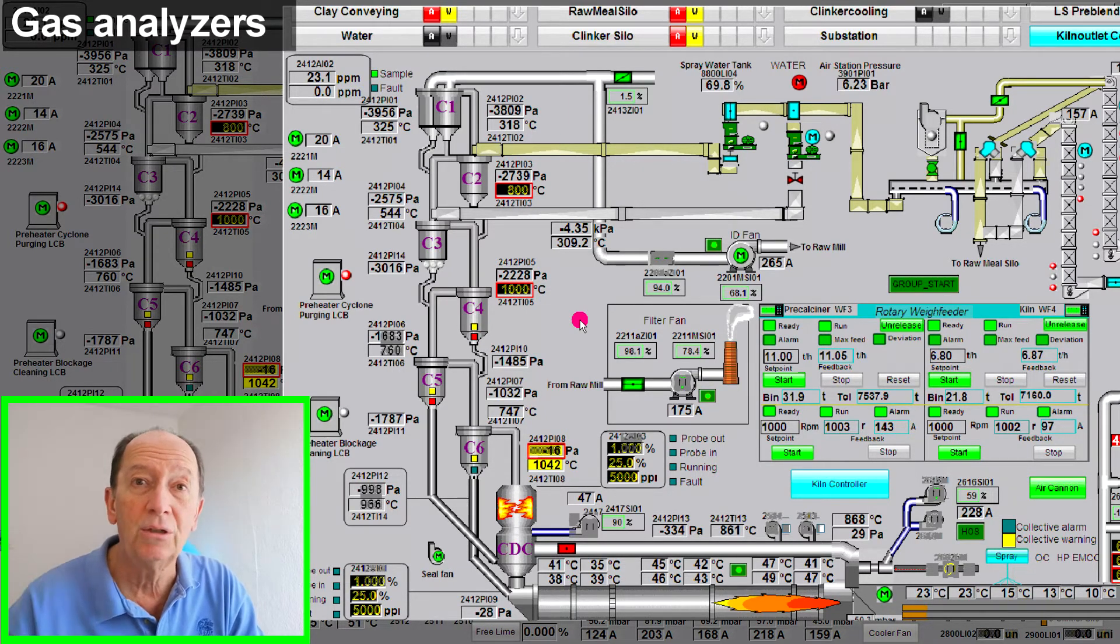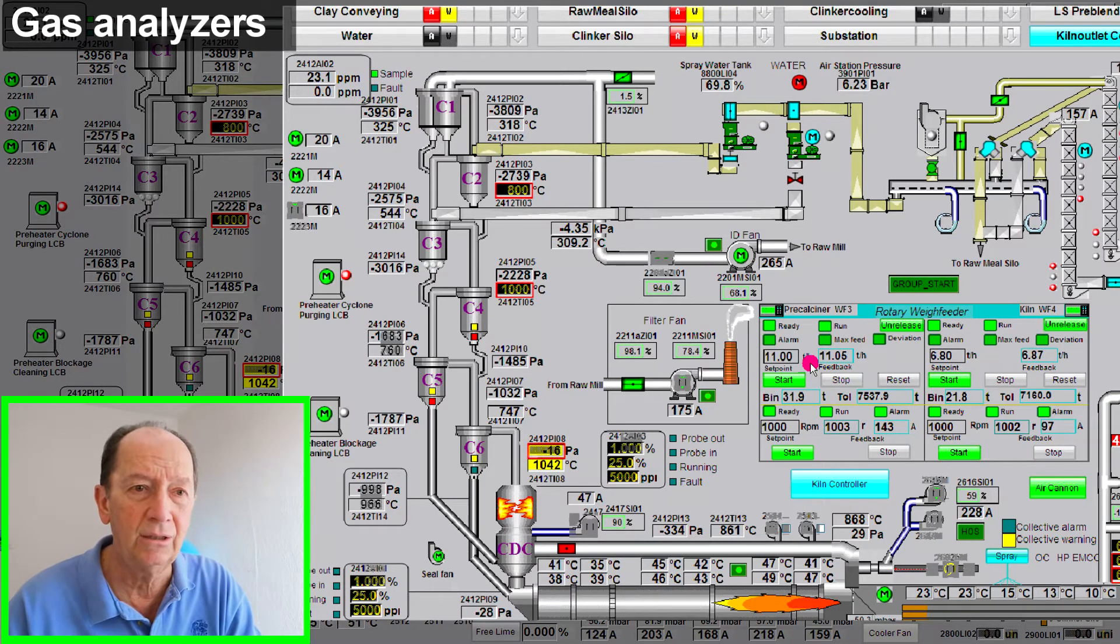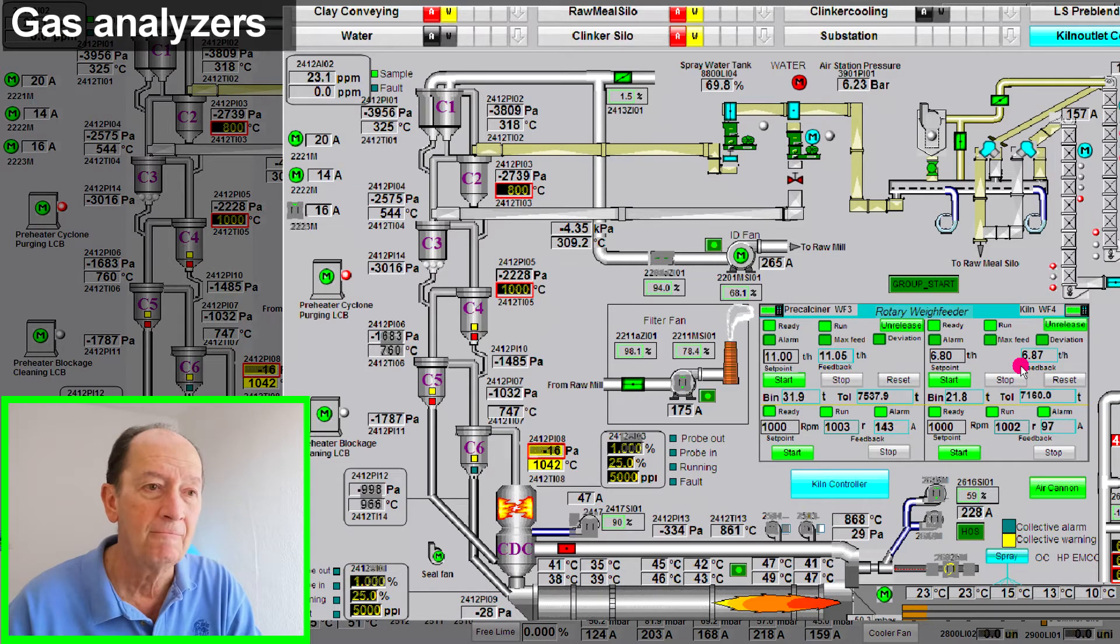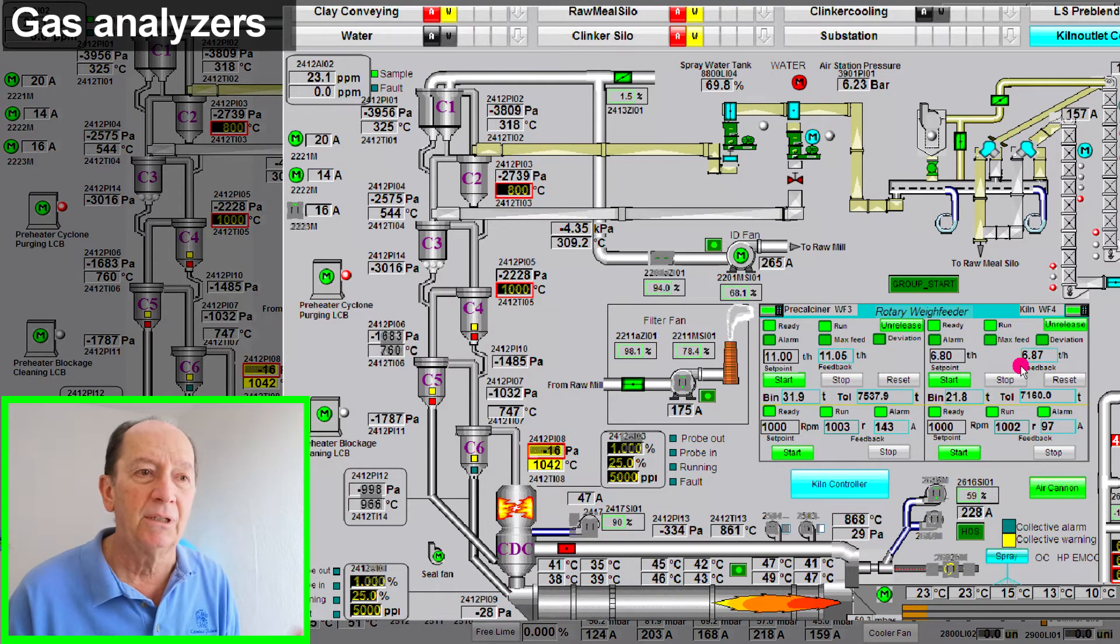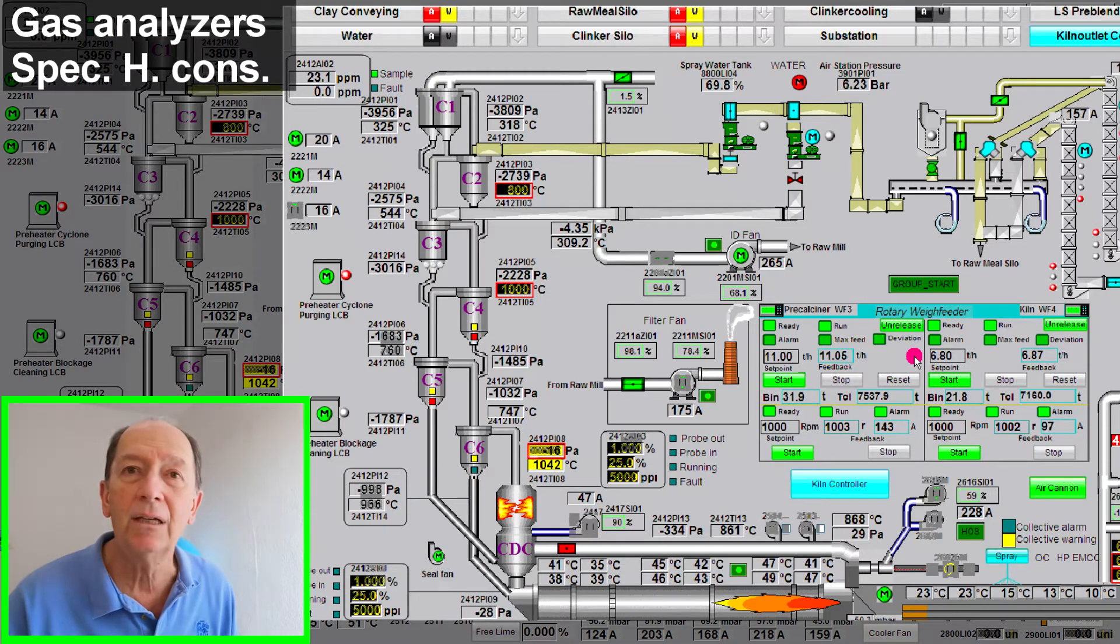That was the first point. Determine what is my combustion in the kiln system. The second point before adding more feed would be what is my fuel distribution. I have on the precalciner side 11 tons per hour. This is coal, most probably. And I have almost 7 tons per hour on the main firing. My proportion is correct. 60% precalciner. This is right. What I miss completely on this layout is specific heat consumption.